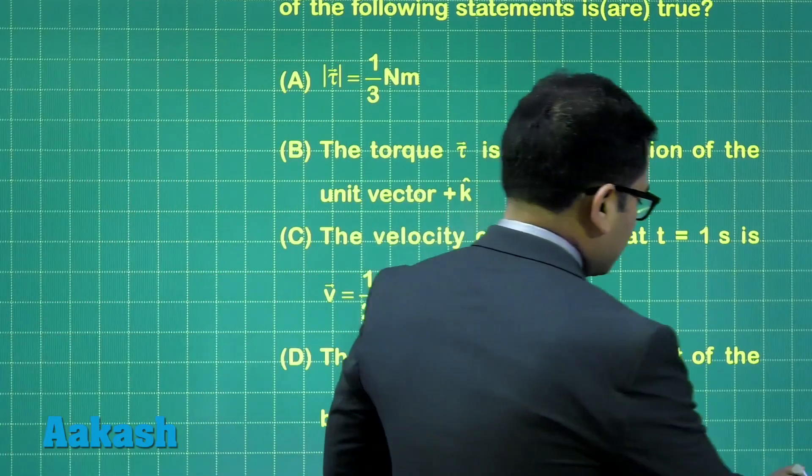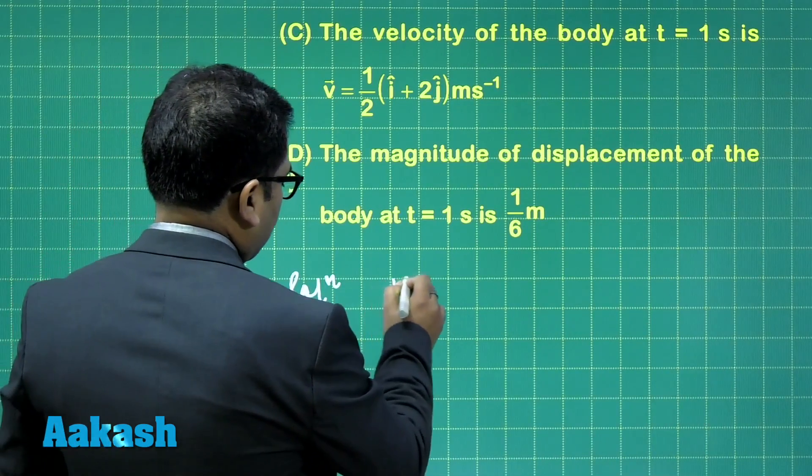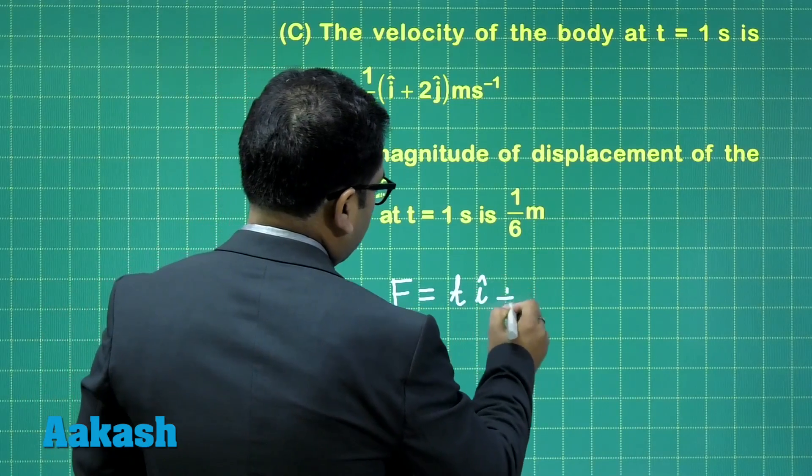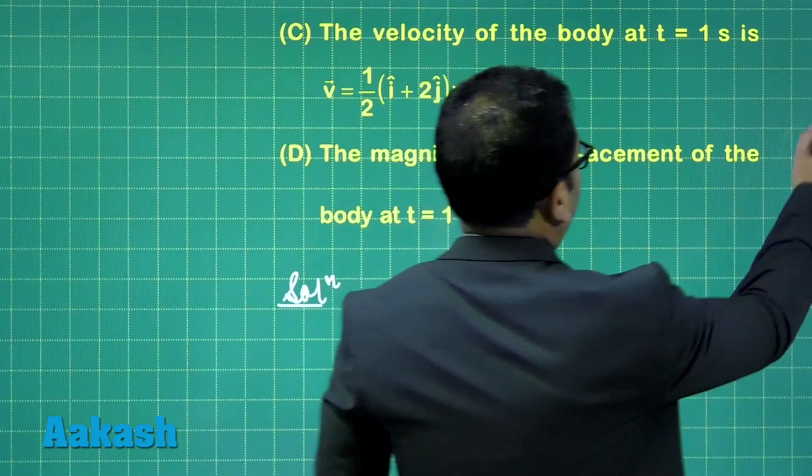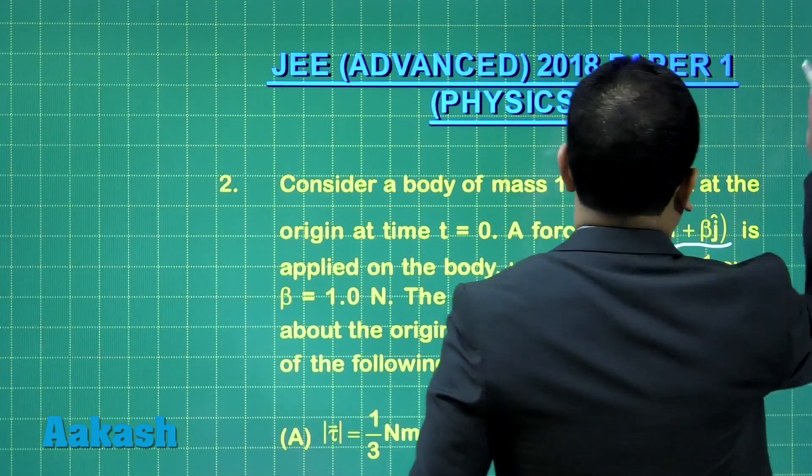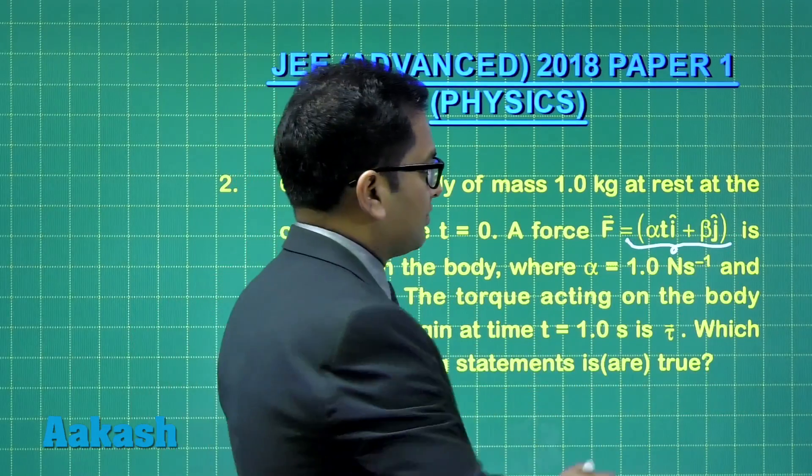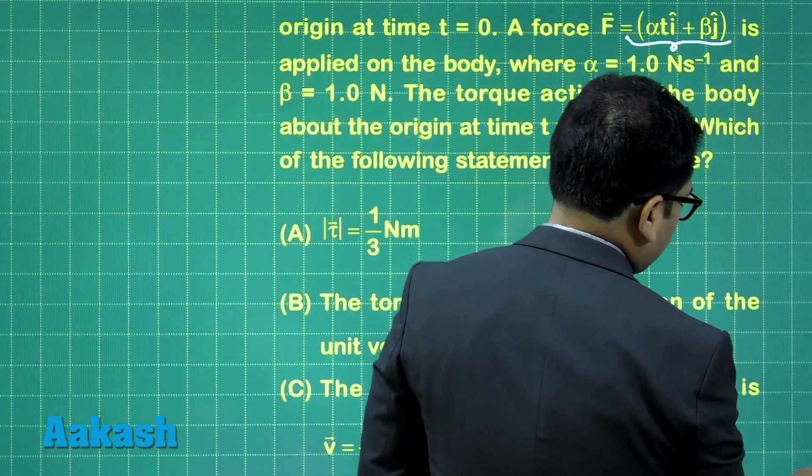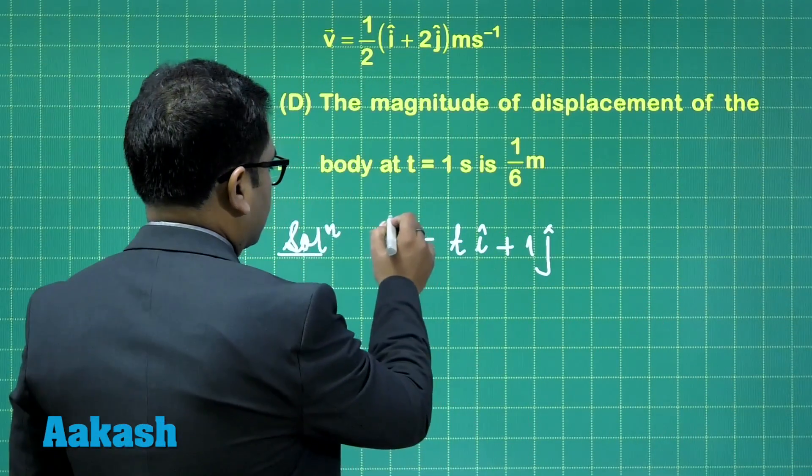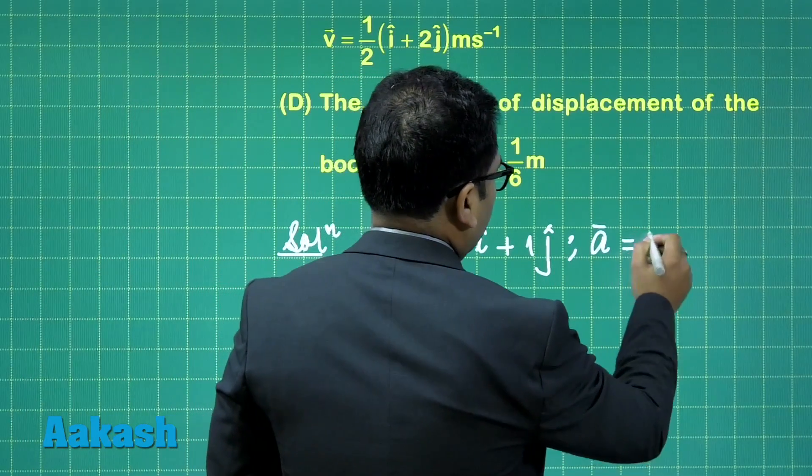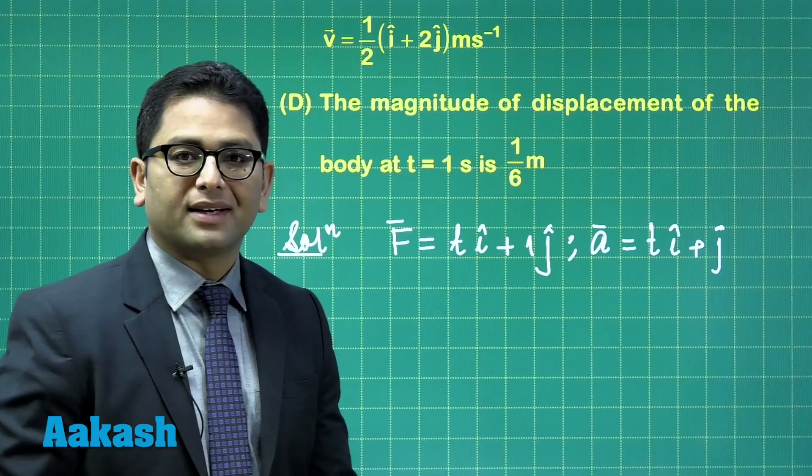So the force is equal to t i cap plus of one j cap, because alpha t i cap plus beta j cap. So alpha and beta are one, so therefore that will be t i cap plus one j cap. Those alpha and beta are just given to satisfy the dimensional ego. So here, f equals to t i cap plus one j cap. Then the acceleration would be equals to t i cap plus of j cap. Reason being straightforward, because the mass is one.